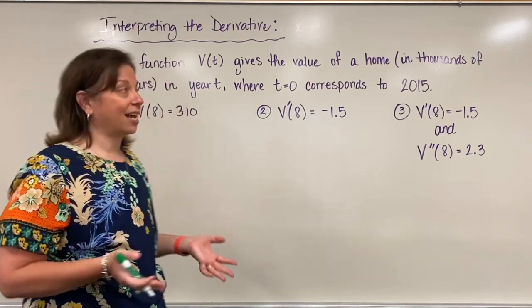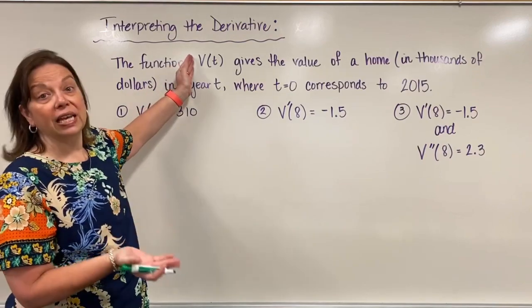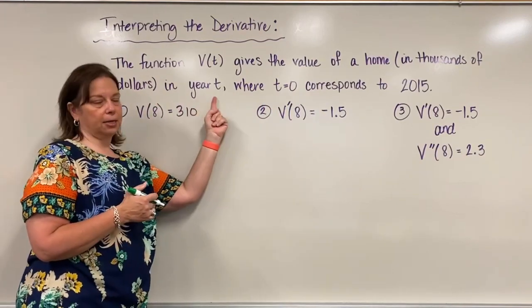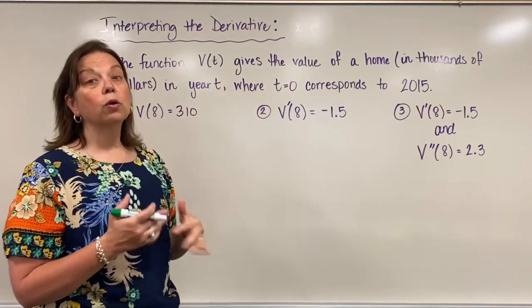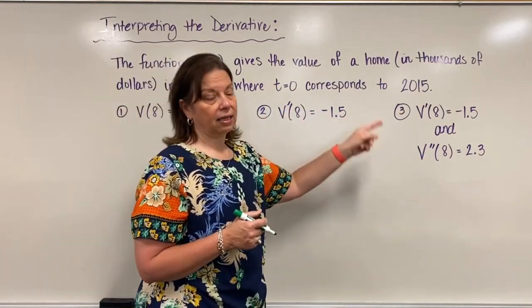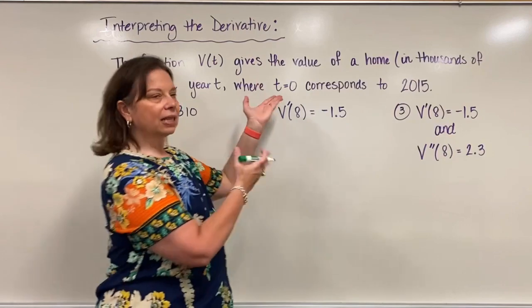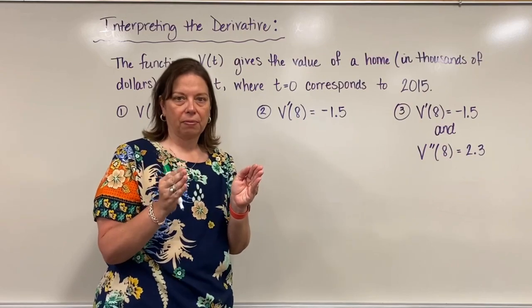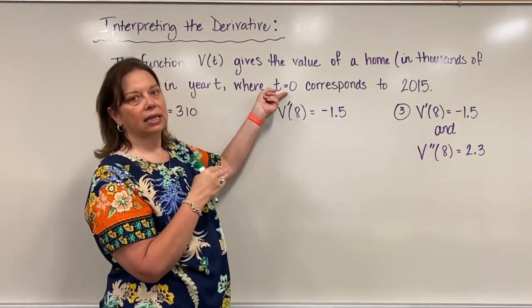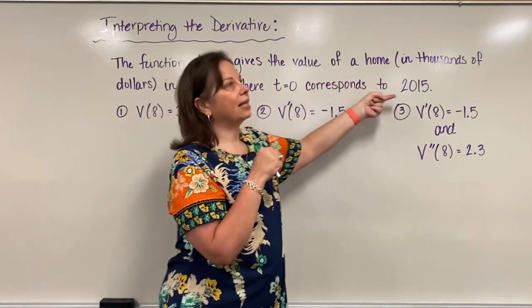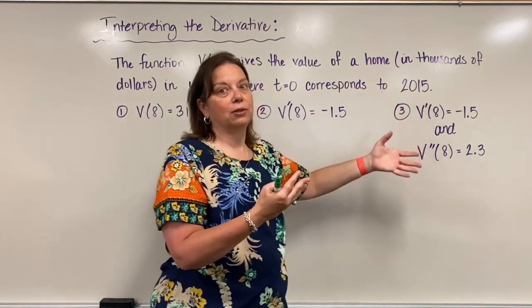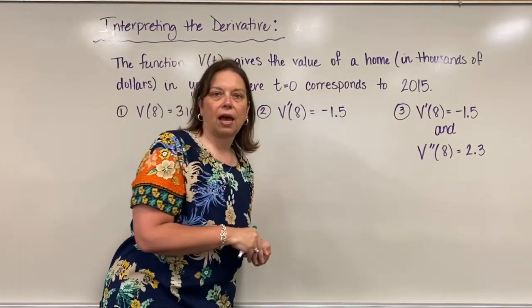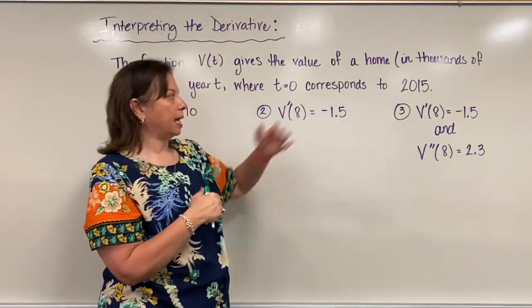So imagine this context. We have some function that we'll call V of T, and it will give the value of a home in thousands of dollars in year T. We're going to let T equals zero correspond to the year 2015. We typically do this with years where we decide a starting year and then propagate forward from there. The starting year is the year that T equals zero, so we don't want to use the actual year number 2015. Instead, we let it be zero, and then all the years after that will be some number of T years after that beginning year.